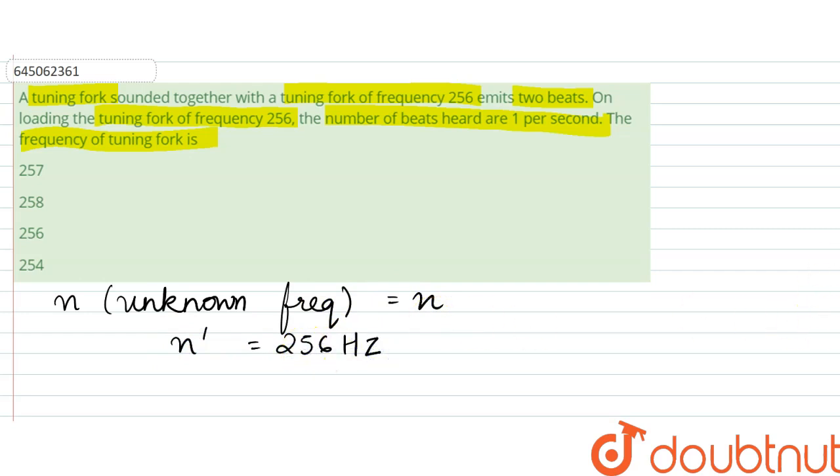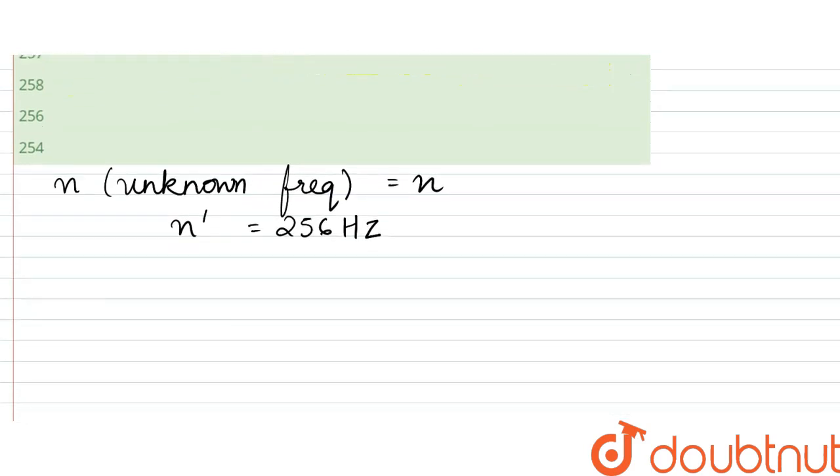Right, and they produce two beats, so either it is 256 minus 2 equals n, or 256 plus 2 equals n, either of them.